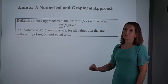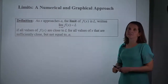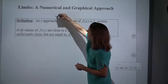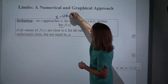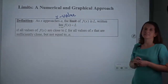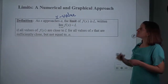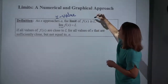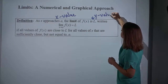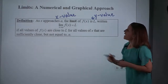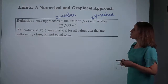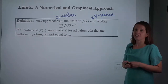So the definition is: as X approaches A — and it's important to notice that A is going to be an X value — the limit of f of X is L. So the answer to a limit is L, meaning L is going to be a Y value. And this is the formal notation: the limit as X approaches A of f of X equals L.